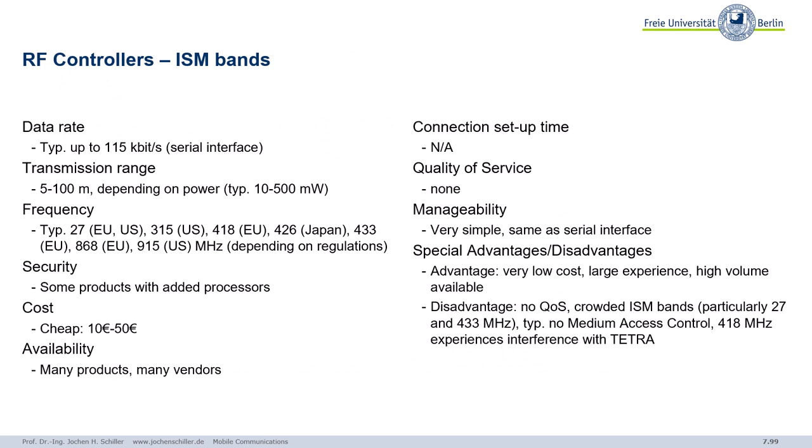Not to forget: there are also very simple radio frequency controllers operating in ISM bands — garage door openers, things like that. Not much contribution to mobile communications, but there are a lot of products — proprietary systems operating at 433 MHz or 868 MHz. A lot is going on in the ISM bands.